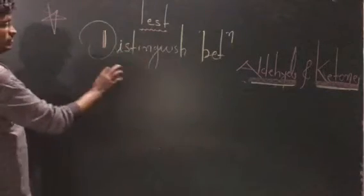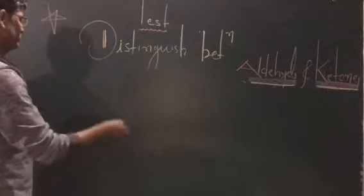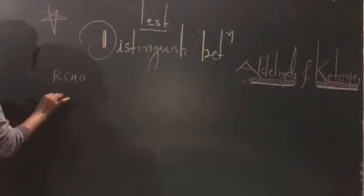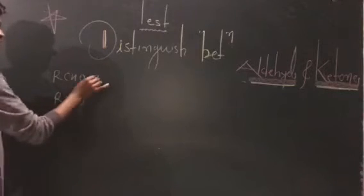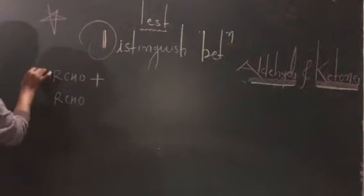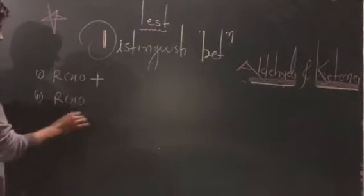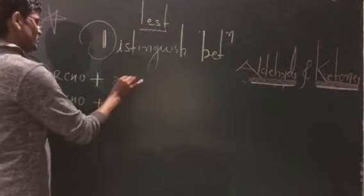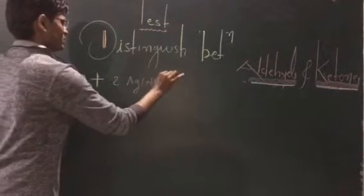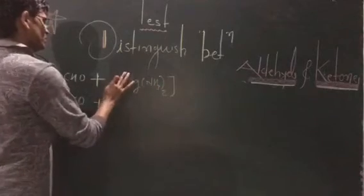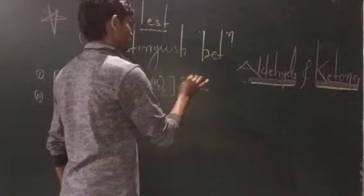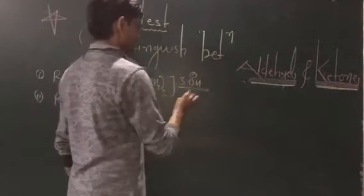In this conditional part, we test to distinguish between aldehydes and ketones. The aldehyde (RCHO) is reactively active. To distinguish aldehyde and ketones, first of all you can take this aldehyde with AgNO₃ taken twice, which is in a hydroxide solution.